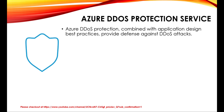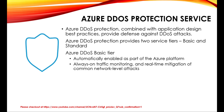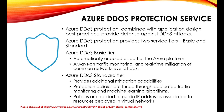Azure DDoS protection provides two service tiers: basic and standard. The Azure DDoS basic tier is automatically enabled as part of the Azure platform. It provides always-on traffic monitoring and real-time mitigation of common network-level attacks. It provides the same defenses utilized by Microsoft's online services, and the entire scale of Azure's global network can be used to distribute and mitigate attack traffic across regions. Protection is provided for IPv4 and IPv6 Azure public IP addresses.